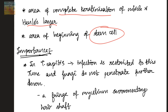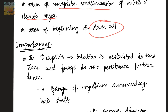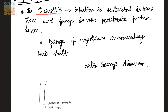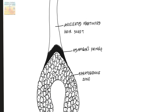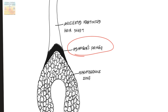The importance of Adamson's fringe is that in tinea capitis infection, the infection is restricted to this zone and the fungi do not penetrate further down into the hair bulb. There is a fringe of mycelium surrounding the hair shaft in tinea capitis. It was first mentioned by British dermatologist Horatio George Adamson, who found this fringe of mycelium surrounding the hair shaft. This area of Adamson's fringe corresponds to the keratogenous zone.